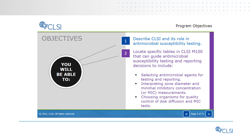In this course, you'll learn about CLSI and its role in antimicrobial susceptibility testing. Then you'll learn how to locate specific M100 tables that will guide your AST testing and reporting decisions, including how to select antimicrobial agents for testing and reporting, how to interpret zone diameter and minimal inhibitory concentration (MIC) measurements, and how to choose the best organisms for performing quality control for disk diffusion and MIC tests.